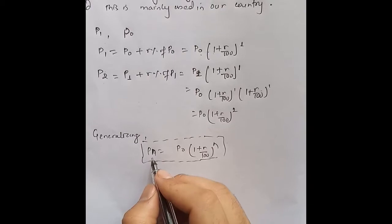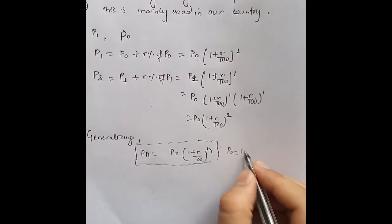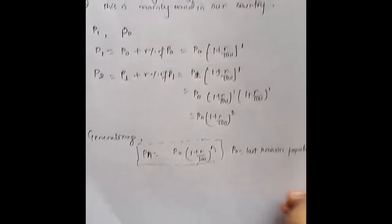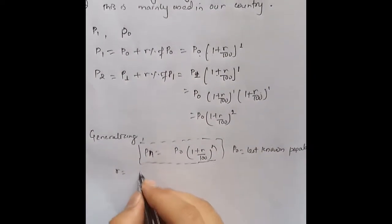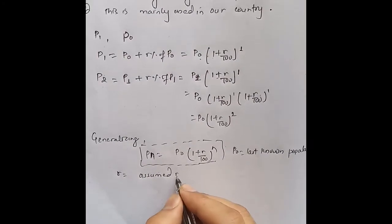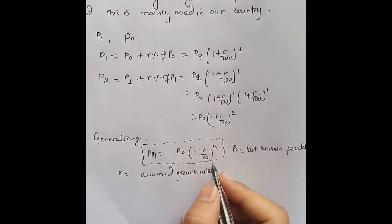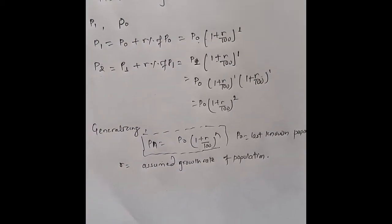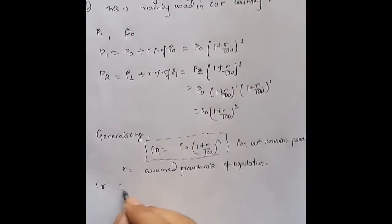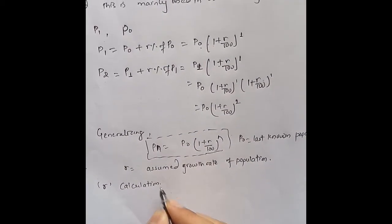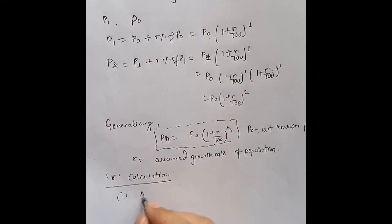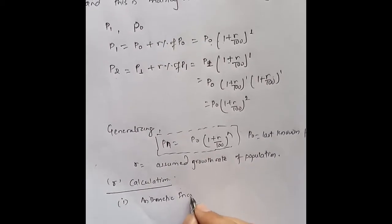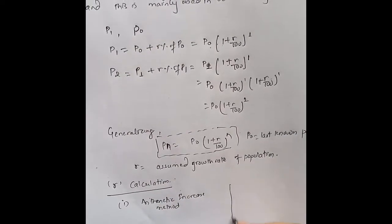In this formula, Pn is the population in the nth decade, P0 is the last known population, and r is the assumed growth rate of population. The calculation of r is important here.